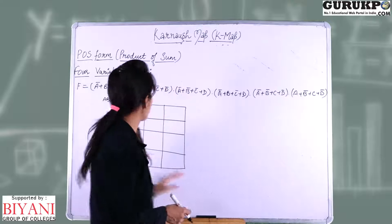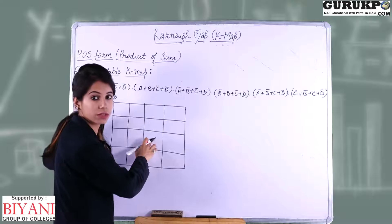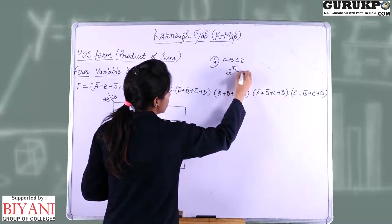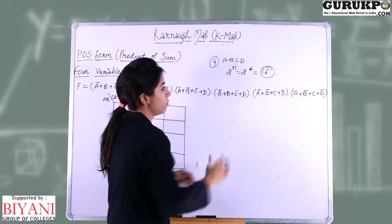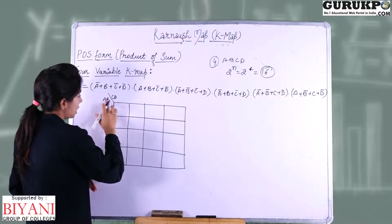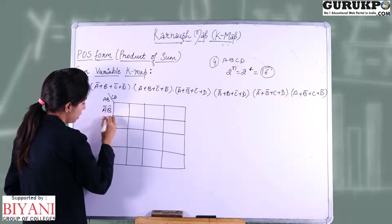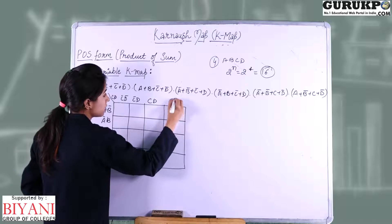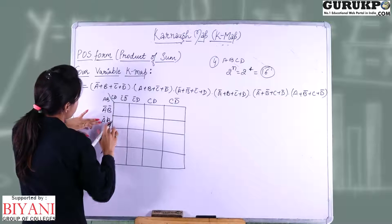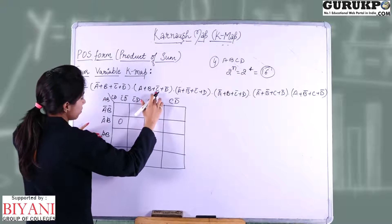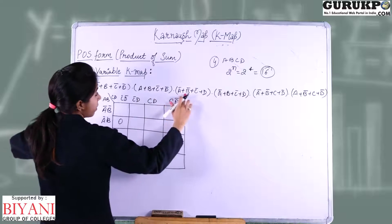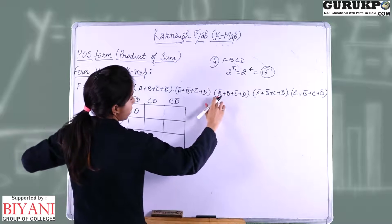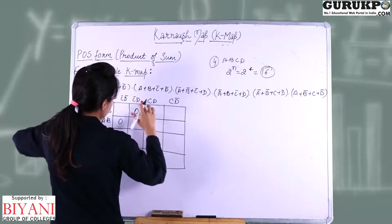Now we will discuss the four-variable K-map. Since we are having four variables A, B, C, and D, the number of cells is 2 to the power 4 = 16. The rows are labeled A-bar·B-bar, A-bar·B, A·B, A·B-bar and the columns C-bar·D-bar, C-bar·D, C·D, C·D-bar. We fill zeros for each given term: (A-bar plus B)·(C-bar plus D) — 0 here; (A-bar plus B)·(C-bar plus B-bar) — 0 here; (A-bar plus B)·(C-bar·D) — 0; (A-bar plus B)·(C-bar plus D) — 0.